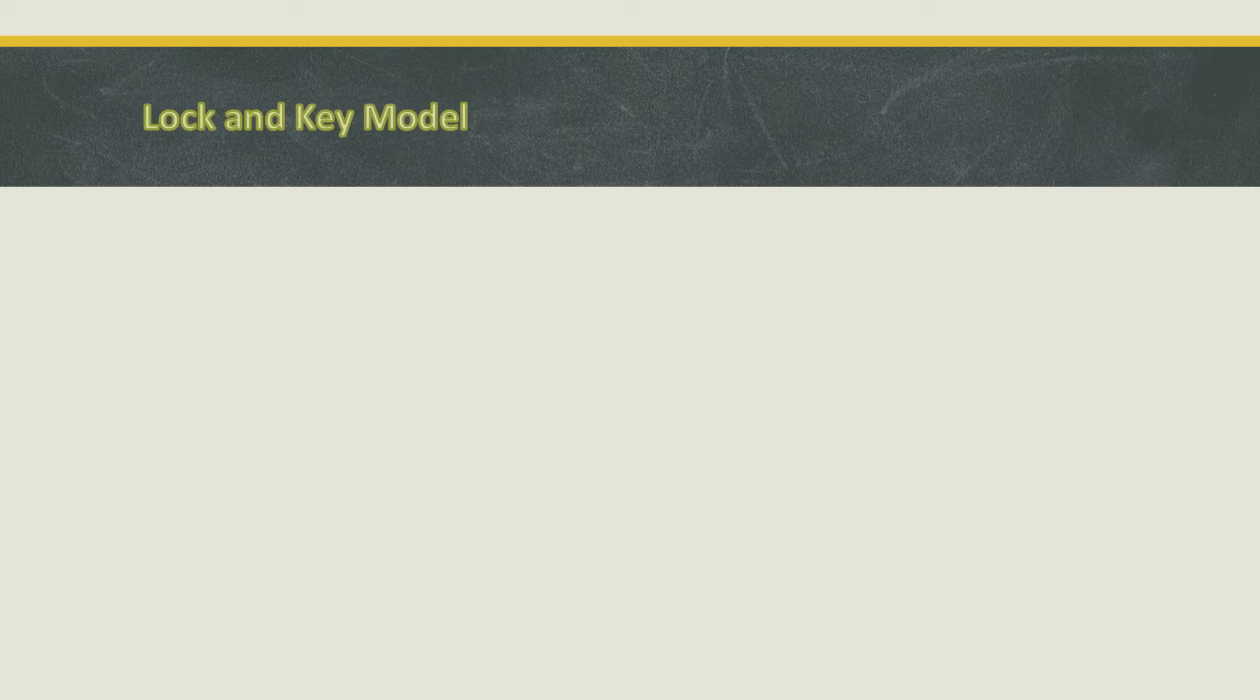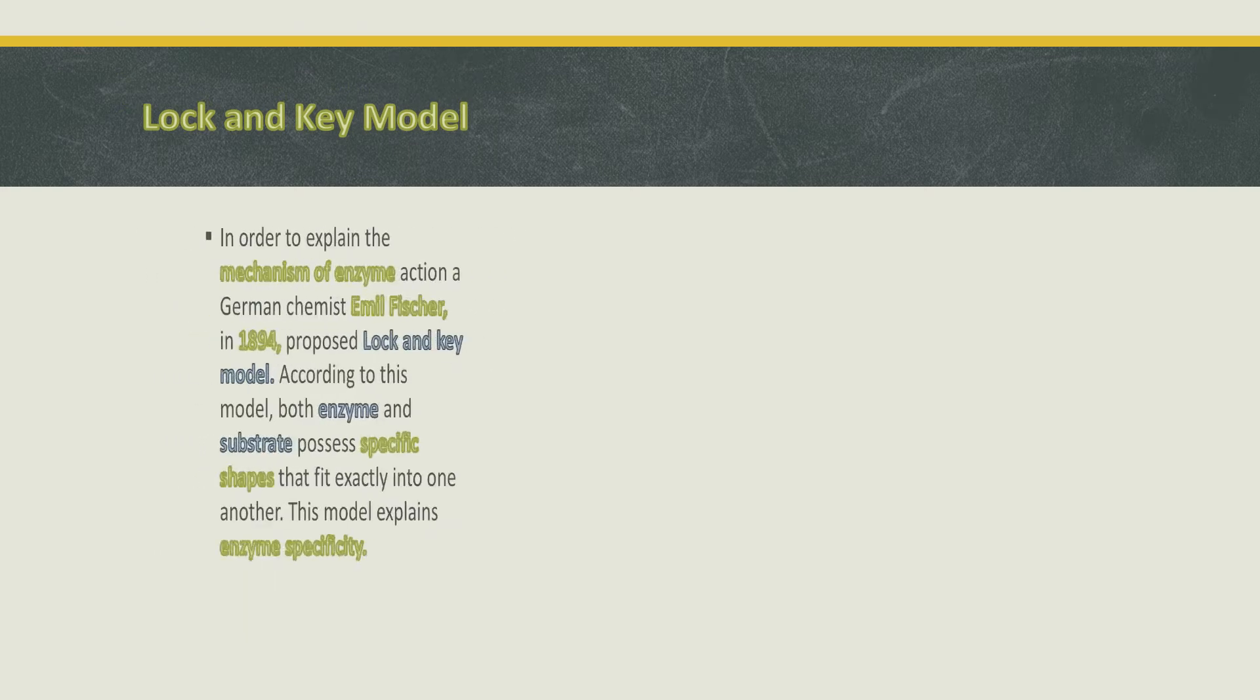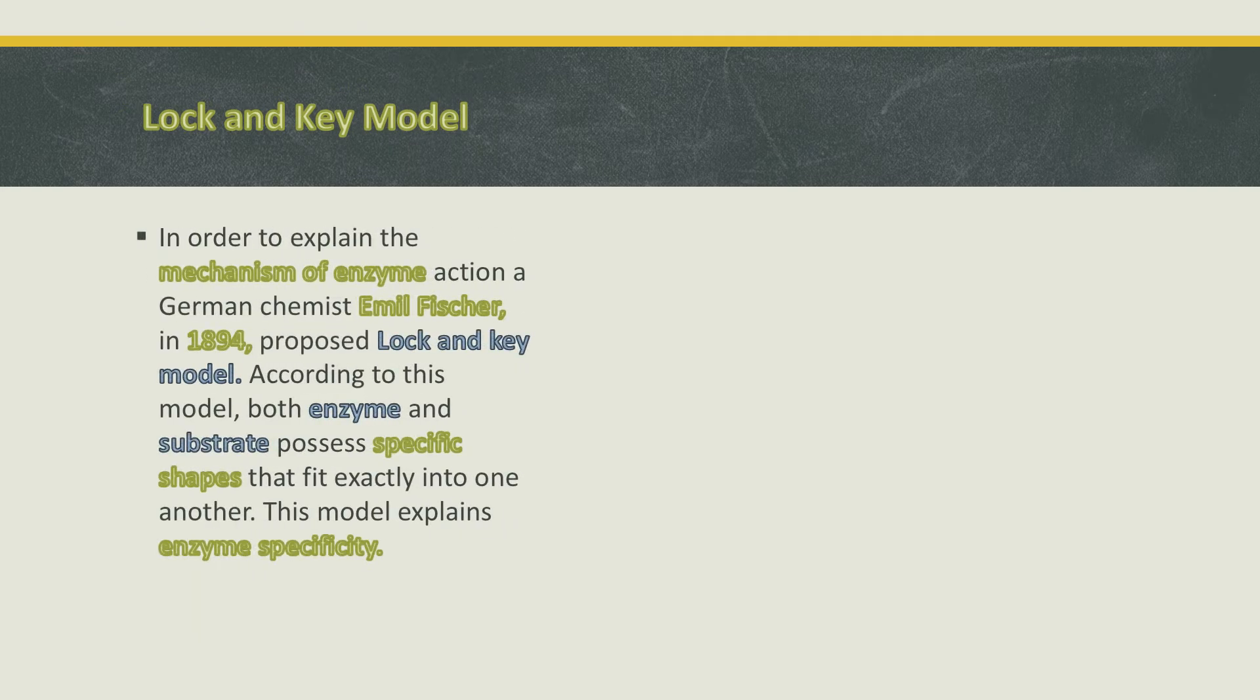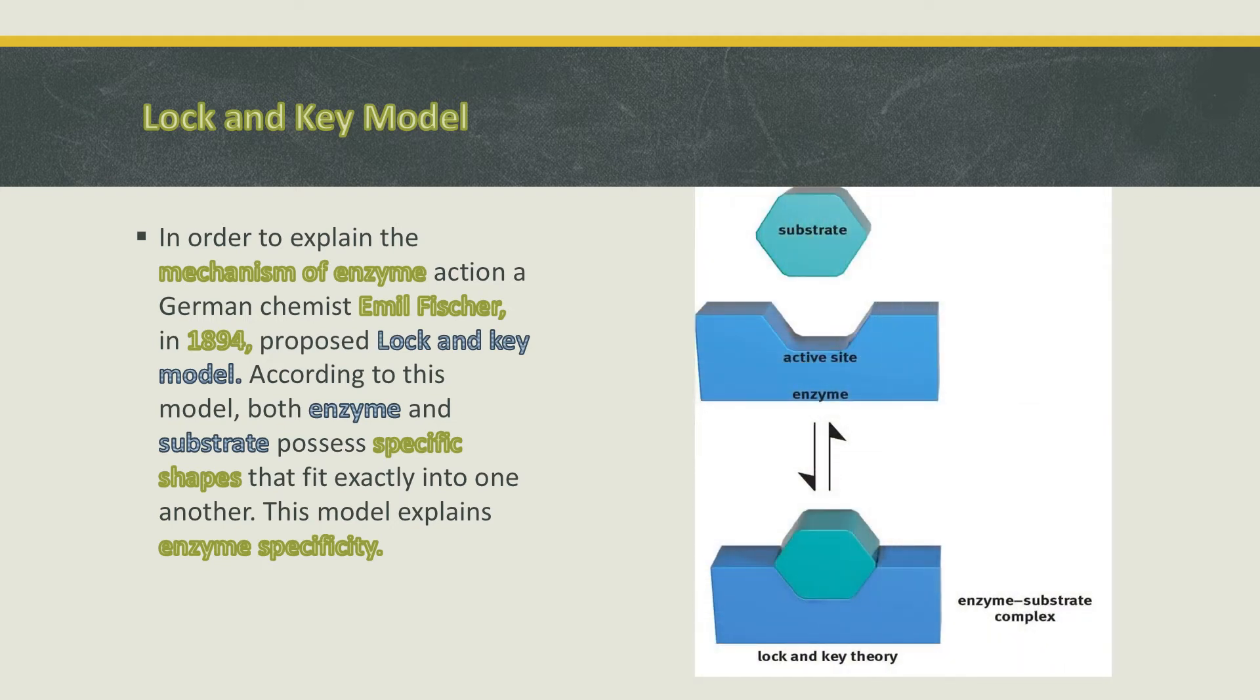First, there is Lock and Key model. Who gives the Lock and Key model? In order to explain the Mechanism of Enzymes Action, a German chemist, Emil Fischer, in 1894 proposed Lock and Key model. According to this model, this model describes the specificity of enzymes.